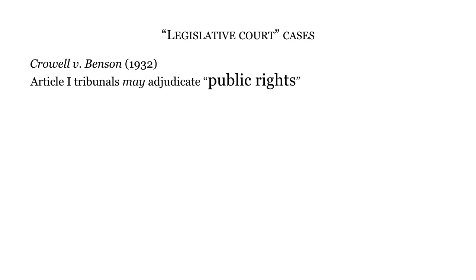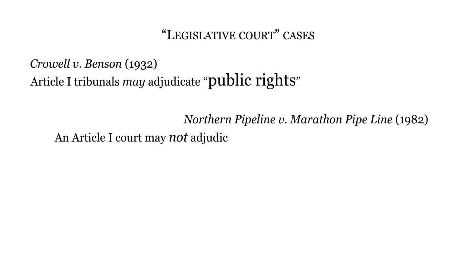It seemed to be settled that public rights can be adjudicated by an agency acting as an Article 1 court. That was the lesson of Crowell v. Benson, which involved the challenge to an administrative award under a federal workers' compensation statute. Although it involved the dispute between private parties, the right was considered a public right because it existed only in virtue of congressional legislation. And then, in the Northern Pipeline case, the court struck down the recently revised Bankruptcy Act on constitutional grounds. An Article 1 court may not adjudicate a private law breach of contract claim brought by or on behalf of the bankrupt. That much was clear, but no rationale could command a majority of the justices.